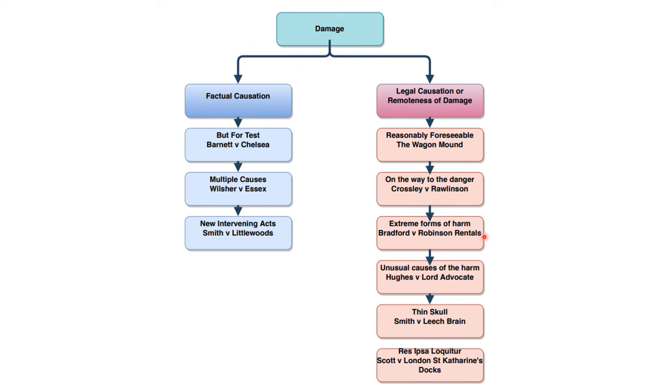You can talk about unusual causes of the harm. Hughes v Lord Advocate, where the boys went down a hole with a paraffin lamp. The thin skull rule is also important, often pops up in scenario type questions. You have to take your victim as you find them. You could talk about Smith v Leach Brain. That was where some molten metal went onto our claimant's lip and triggered off latent cancer that our claimant was suffering. Our defendant had to take his victim as he finds him, thin skull rule.